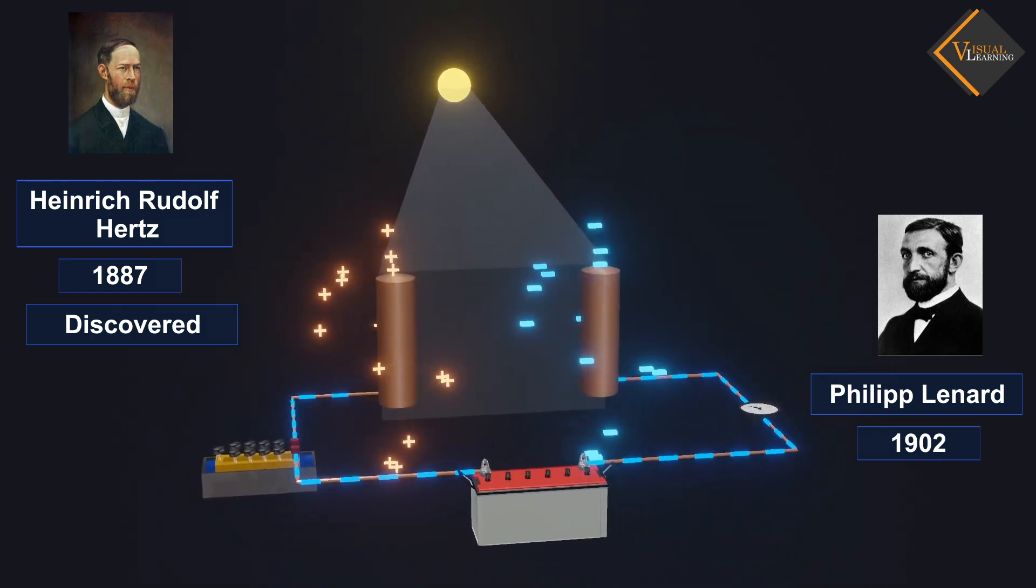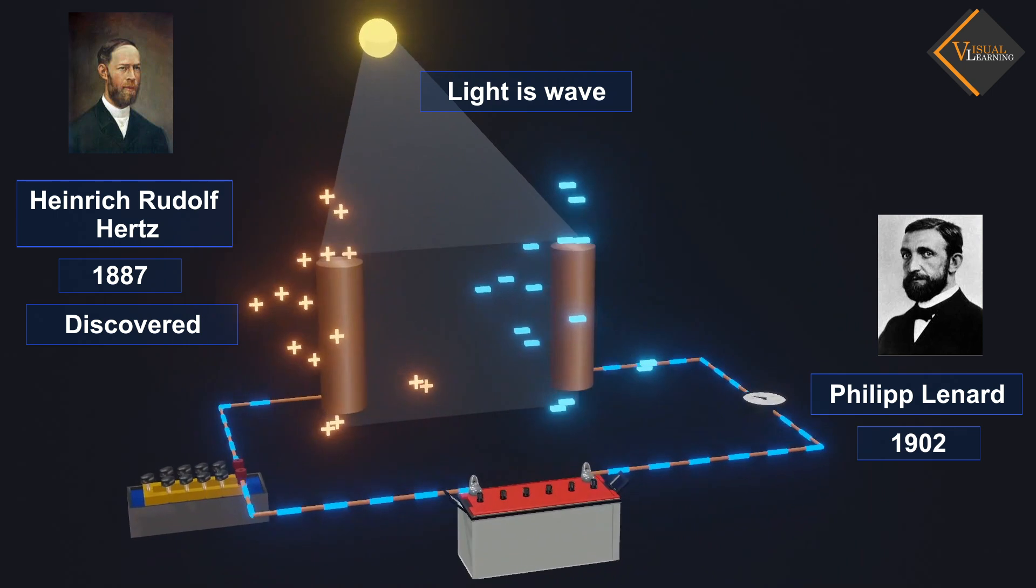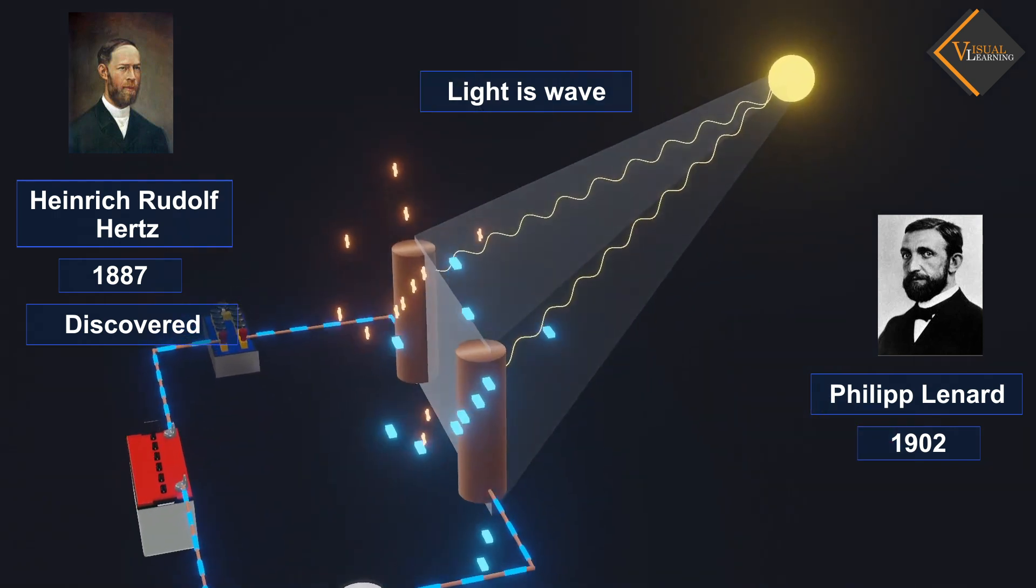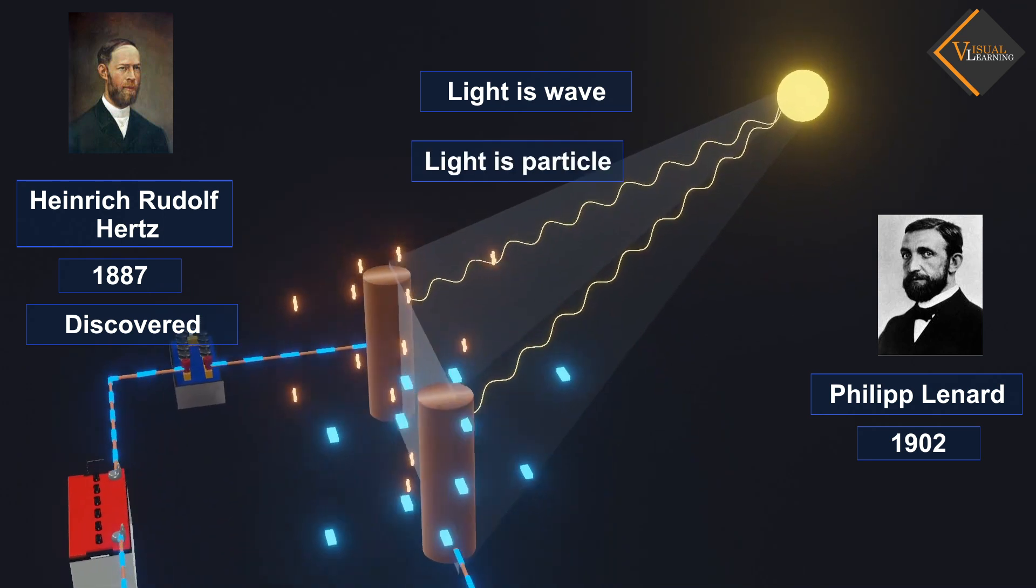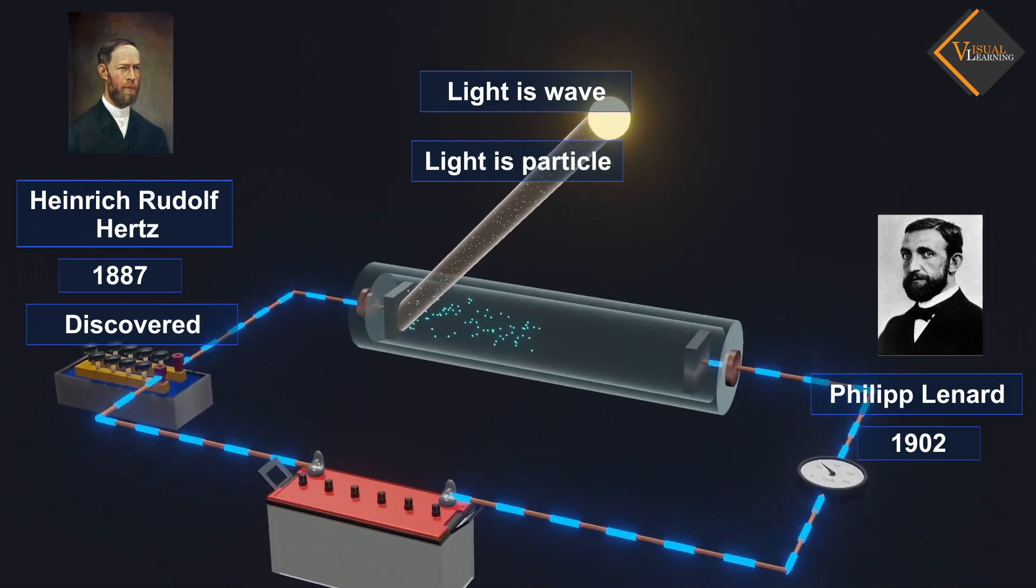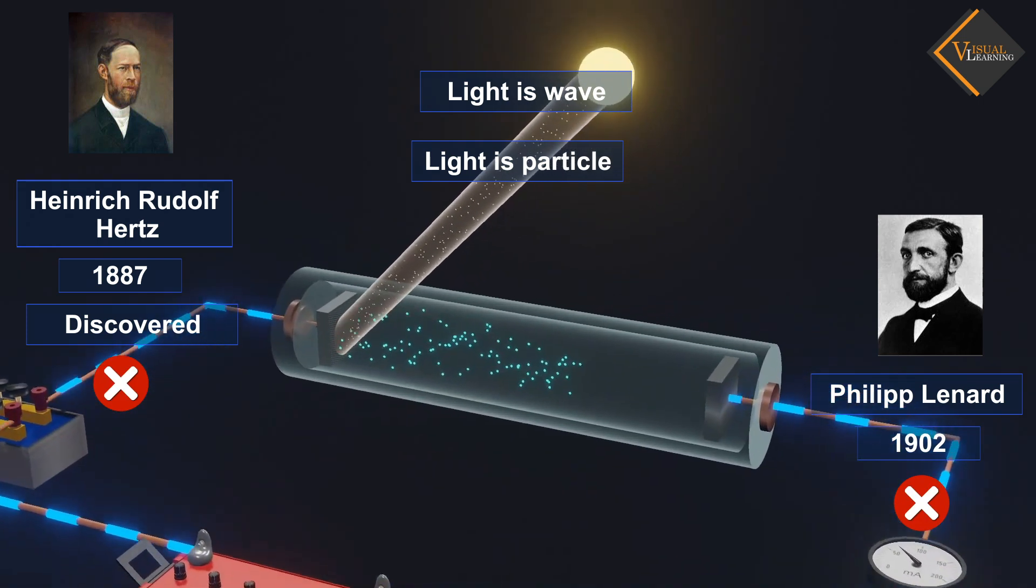Before this discovery, light was considered to be a wave. But after the discovery of the photoelectric effect, it was found that light also has particle nature. Due to this, classical physics could not explain this phenomenon.